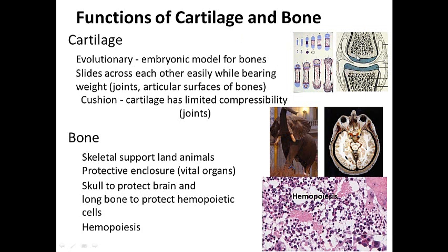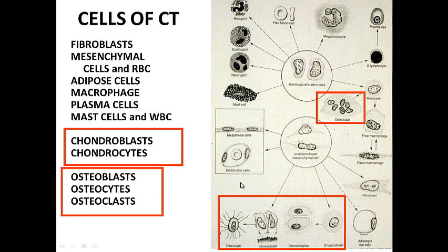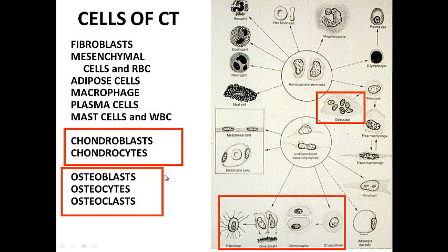Bone also protects vital organs such as the liver and lungs, and even protects the brain — we see the human skull protecting the brain. It is in the bone marrow that we have hematopoiesis, where blood cells are made. So cartilage is a structural support and in the adult allows movement in joints, while bone is a major supporting structure of the body.